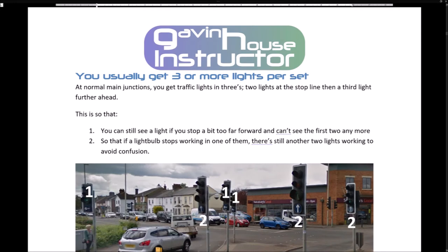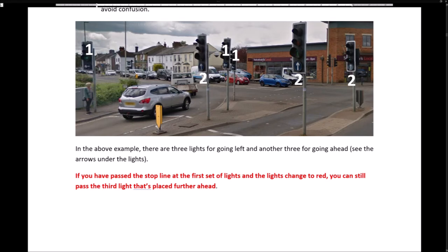You usually get three or more lights per set. At normal main junctions you get traffic lights in threes: two lights at the stop line and a third light further ahead. This is so that you can still see a light if you stop too far forward and can't see the first two anymore, and so that if a light bulb stops working, there are still two lights working to avoid confusion. There are three lights for going left and another three for going ahead — look for the arrows under the lights. If you have passed the stop line at the first set of lights and the lights change to red, you can still pass the third light placed further ahead.